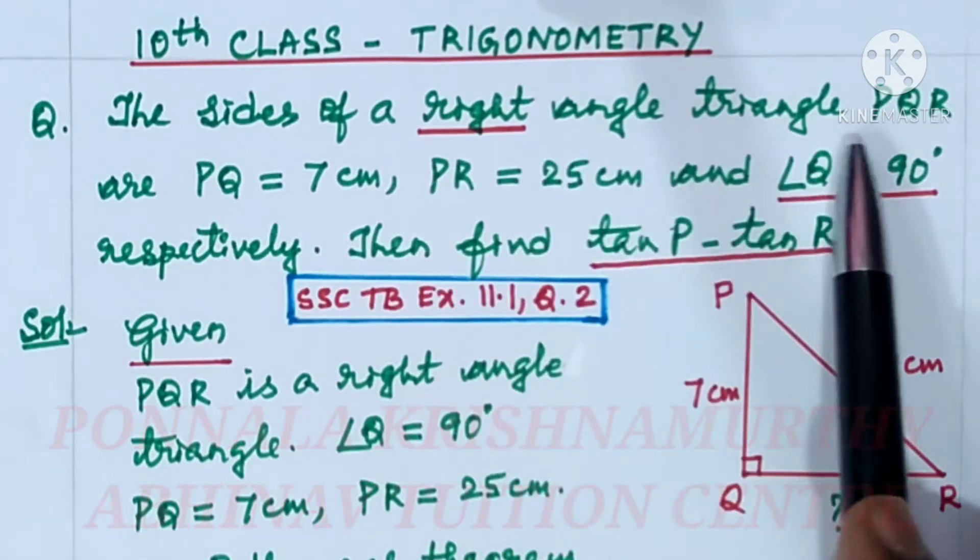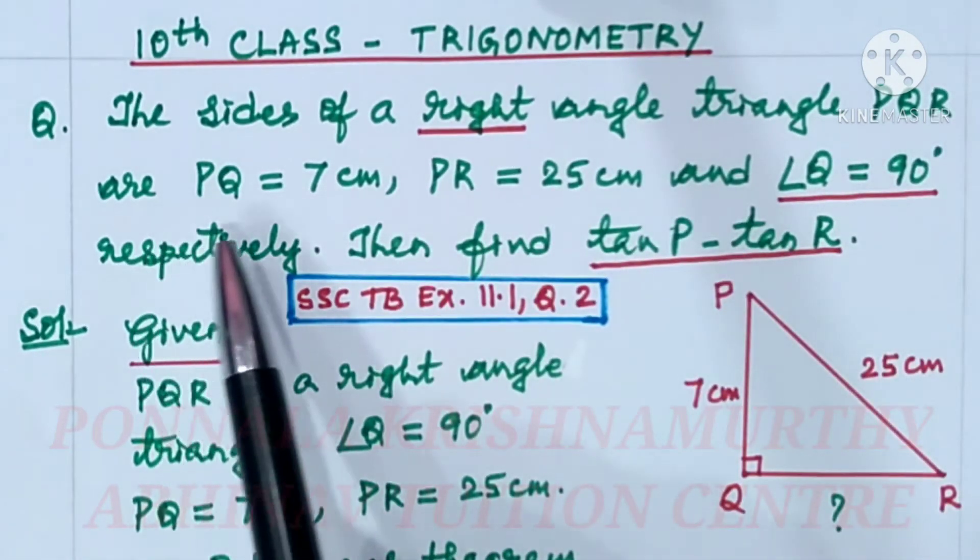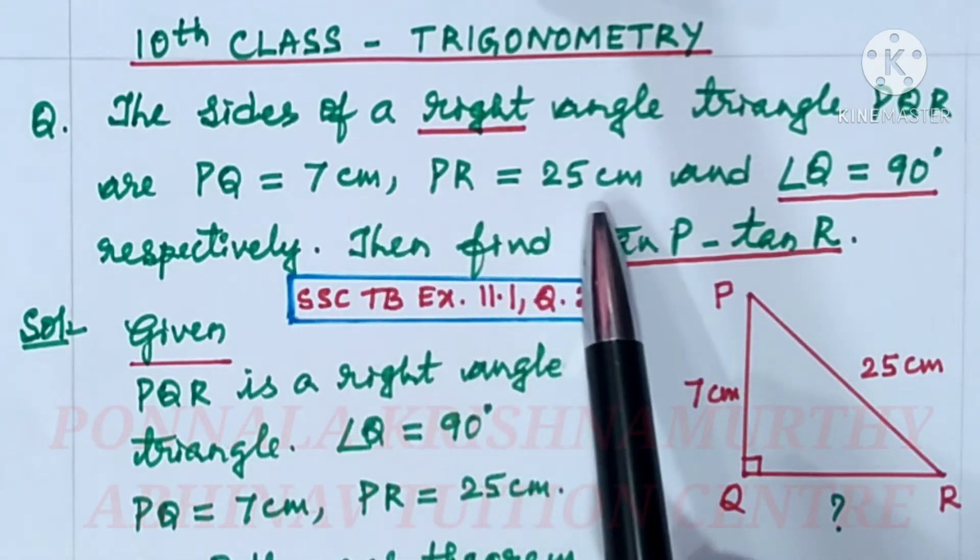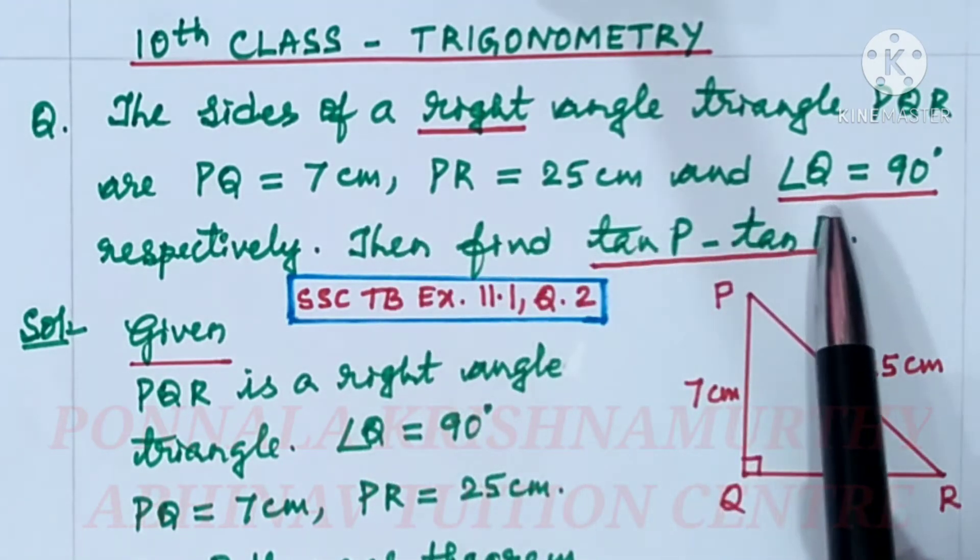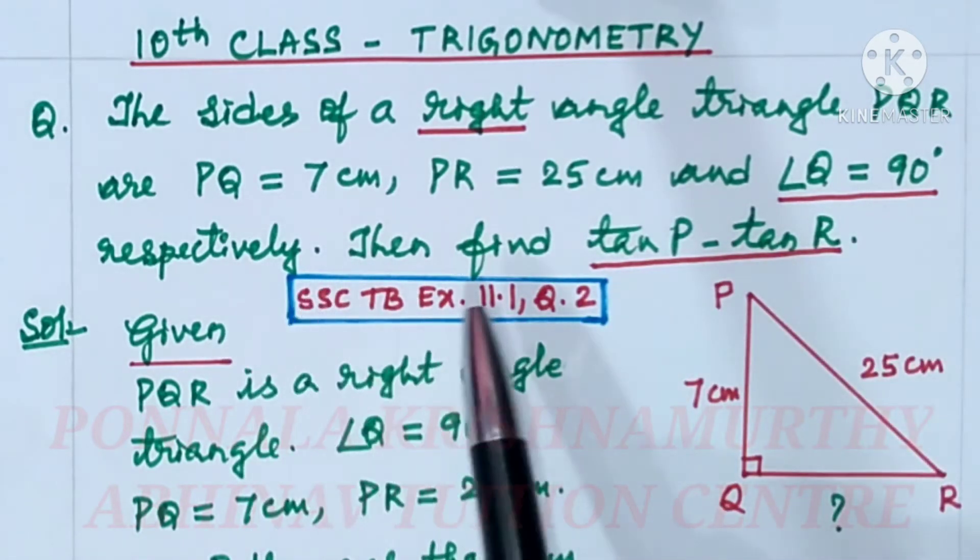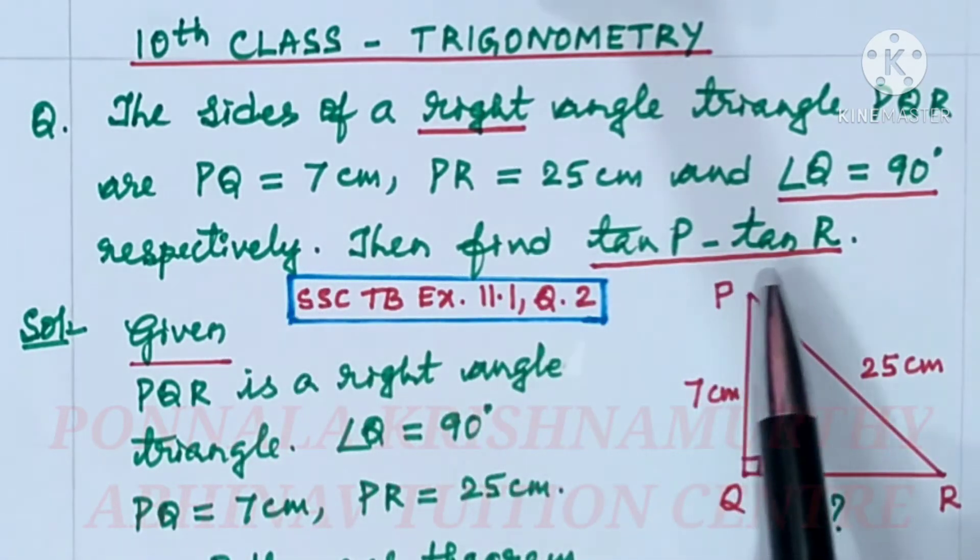The sides of a right angle triangle PQR are PQ equal to 7 centimeters, PR equal to 25 centimeters, and angle Q equal to 90 degrees respectively. Then find tan P minus tan R.